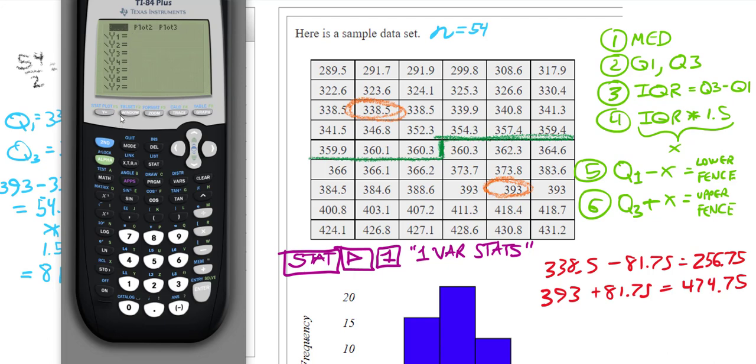I clicked the Y equal key, and I looked to see that there were no functions because we can't have those on the screen. Now, I want this plot one to be black. If it isn't black, you're going to have to hit enter. Most of the time it will not be highlighted. So you can click enter to turn it on. Now we're going to go second Y equals. And we have our plot one turned on, but it doesn't look like the right kind of plot we want. Make sure that you move over and turn that cursor on.